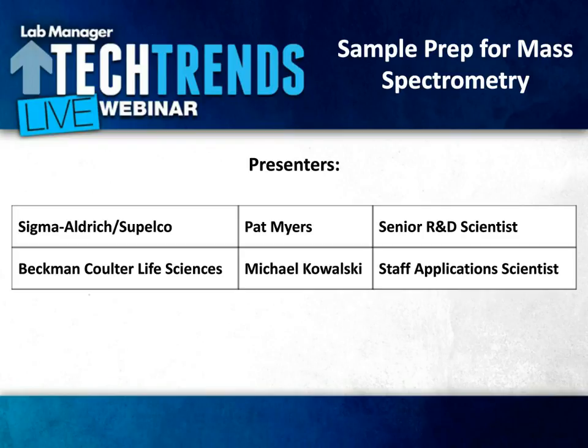To ask a question, simply type your query into the Q&A box located at the bottom left-hand side of your screen, and we'll try to address as many of these questions as possible during the question and answer session. If we happen to run out of time, I'll forward any unanswered questions to the panelists and they can respond to you via email. Additional resources may be accessed via the file folder icon located at the bottom of your screen. You may also move or resize any of the windows simply by grabbing them at the top or stretching them at the bottom right corner. At this time, you may need to move or minimize some of the open windows to see the live view.